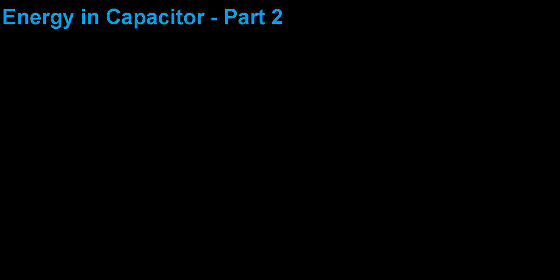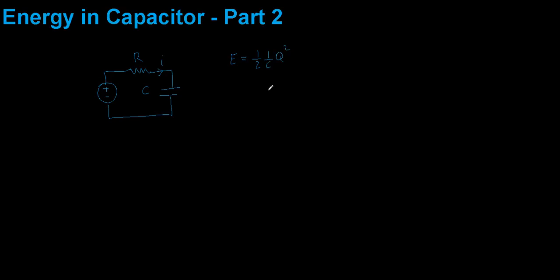In part one of this presentation we found that if you charge a capacitor through a voltage source and a resistor R with capacitor C and current I, the total energy stored in the capacitor was given by 1 over C times Q squared. We also know that the capacitance is equal to the charge divided by the voltage.